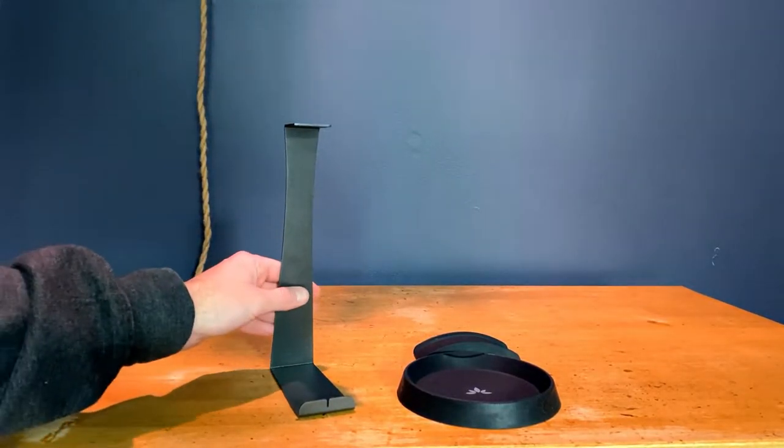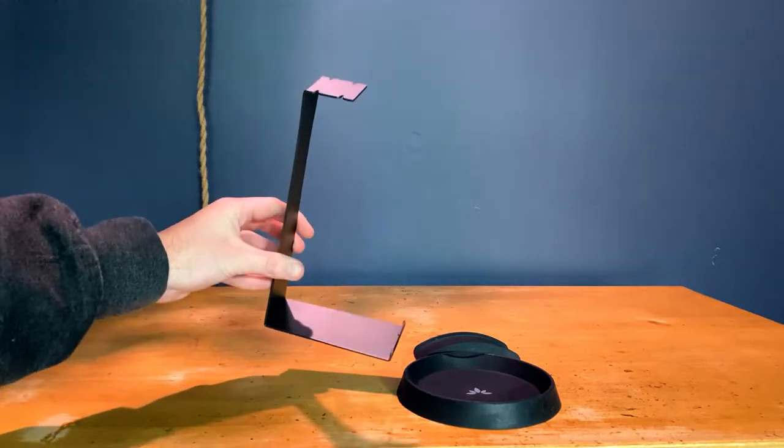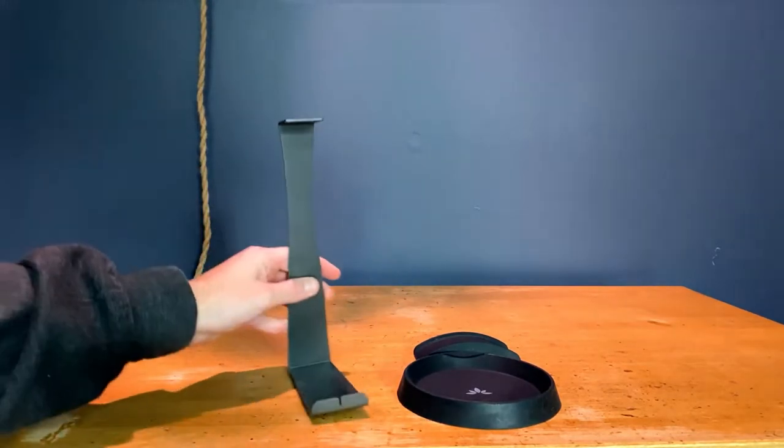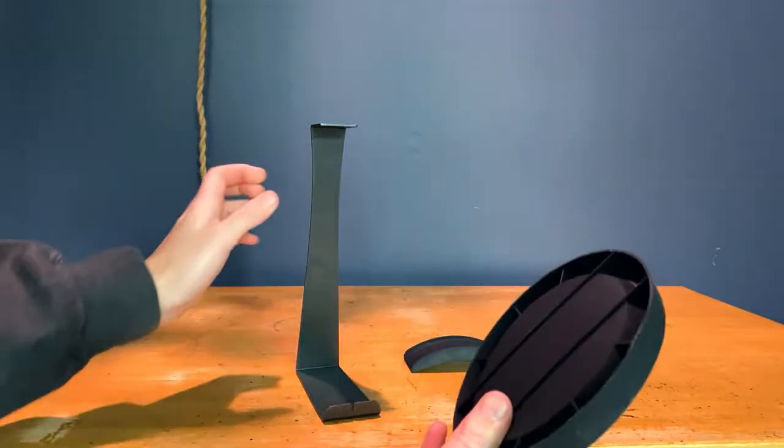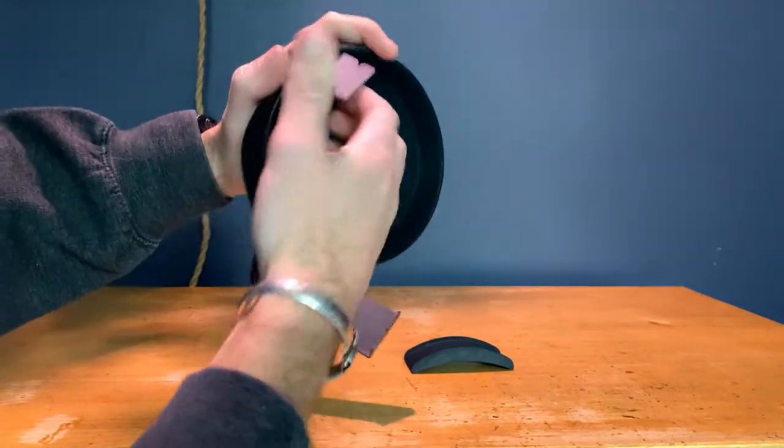Here we have the Avantri metal and silicone headphone stand hanger. This is how it comes: just steel, silicone base plate, and the headphone holder. Pretty easy to put together. All we're going to do is slide the base plate over the top.